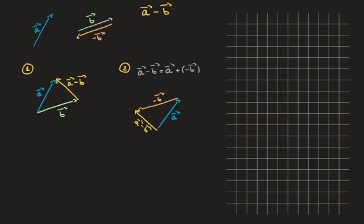Although these weren't drawn perfectly to scale, you can appreciate that the two vectors we obtain from both methods are the same ones, which shows that it doesn't matter which method you use — you'll get the same result. To illustrate that further, let me use the grid on the right-hand side to work through a concrete example.